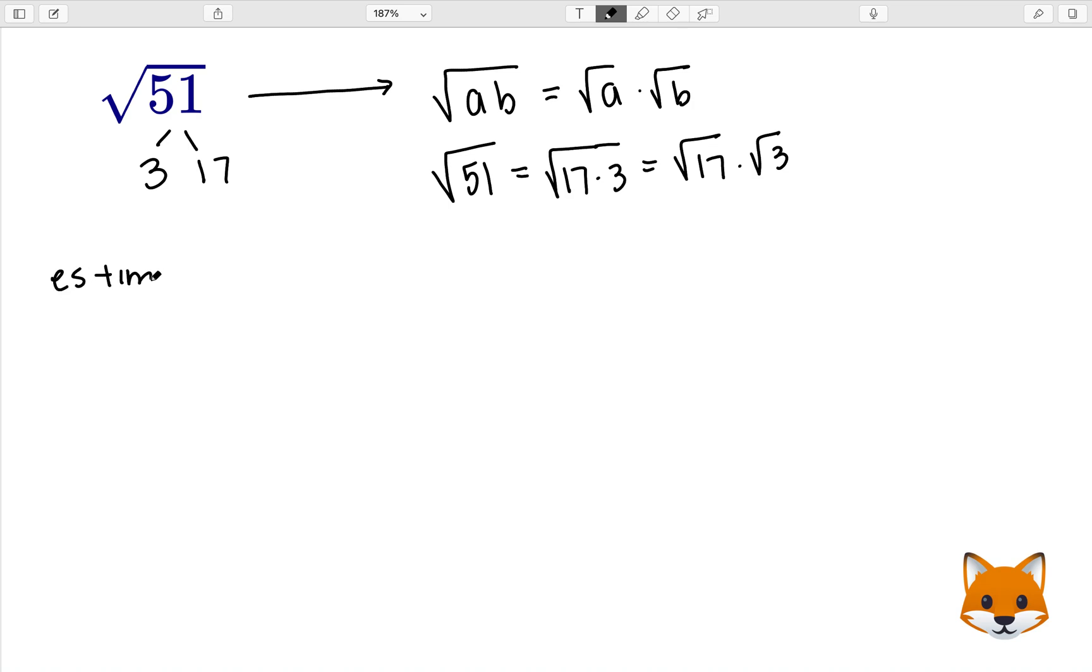Now if we're trying to estimate the square root of 51, we can look at perfect squares near the value of 51. So the first perfect square near 51 is 49. So 7 squared gives us 49 and that's a little less than 51.